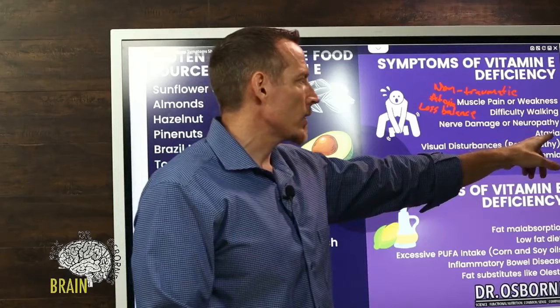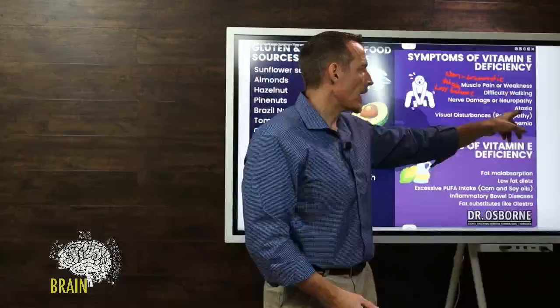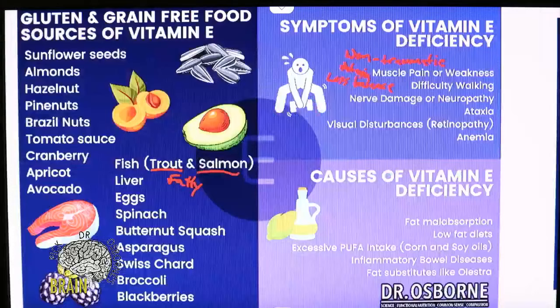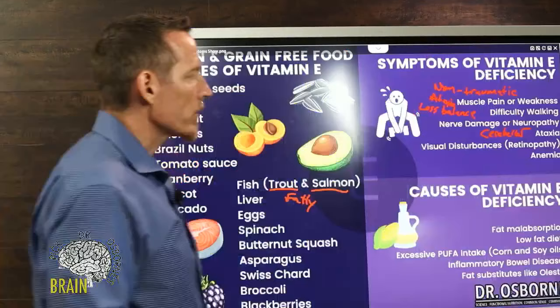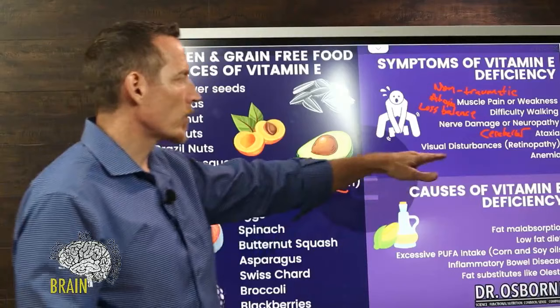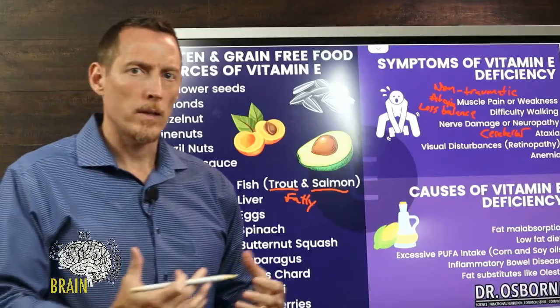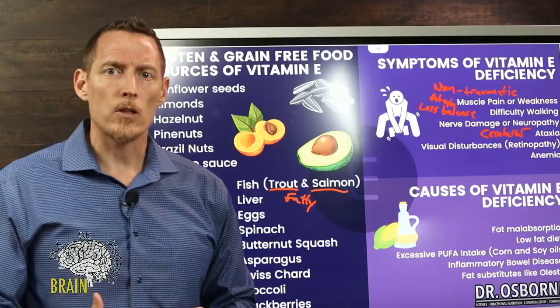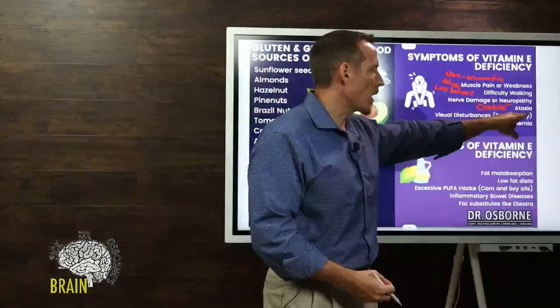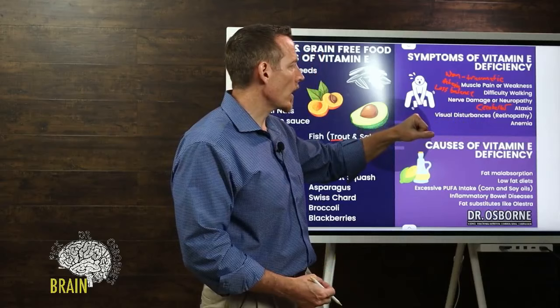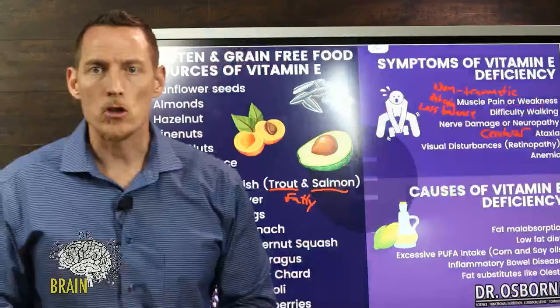Nerve damage and neuropathy are also symptoms — ataxia is actually a form of neuropathy. If you've ever been diagnosed with cerebellar ataxia, talk to your doctor about vitamin E. Additionally, visual disturbances — specifically retinopathy, meaning damage of the retina. If an eye doctor says you have retinopathy, the smart next question is: could a vitamin E deficiency be contributing to that? Ask your doctor to test your level.